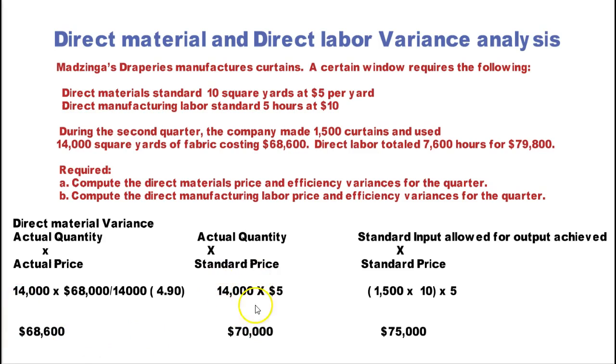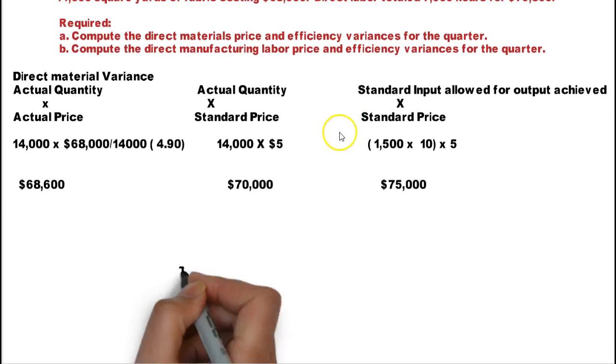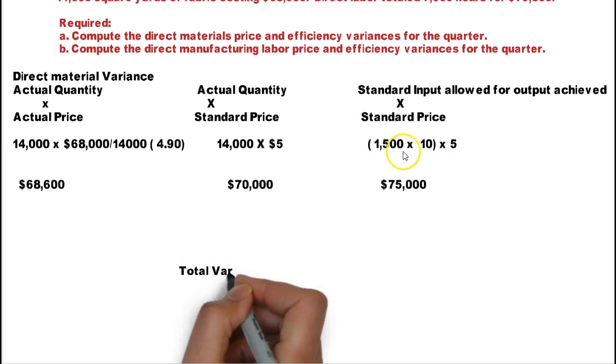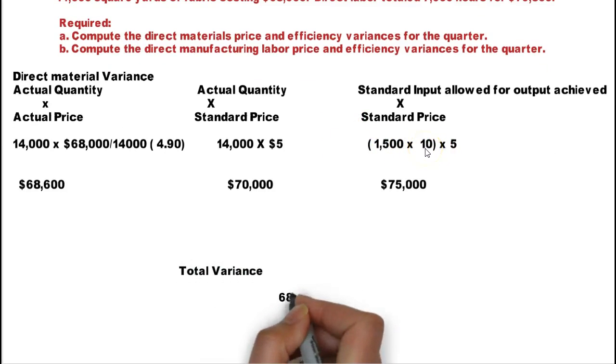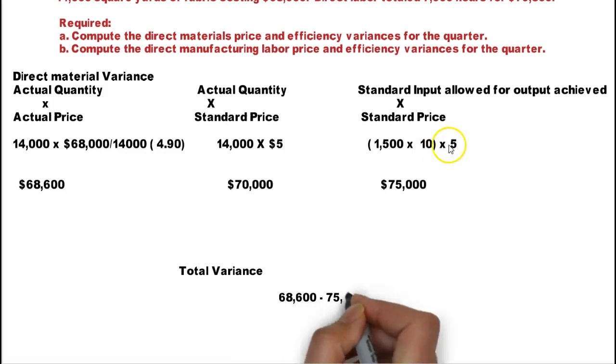The actual quantity, 14,000 times the standard price, that's straightforward. Now the standard input allowed: they allowed you to use 10 square yards for each curtain. So therefore, it would be 15,000 square yards times $5 or $75,000. So the total variance is $68,600 minus $75,000, which gives me $6,400. Left is less than right, so it is favorable.